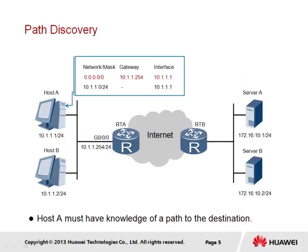Prior to the encapsulation or forwarding of data, it is necessary that the sender be aware of a path to the intended destination. Host A represents the sender, to which it is intended that data be forwarded to server A via RTA. An IP routing table exists within host A that lists all of the known networks, which currently comprises only the network to which it is connected. In the table, the network 0.0.0.0 is stated and refers to any network, along with the path by which the data should be forwarded, which in this case specifies the gateway of RTA.